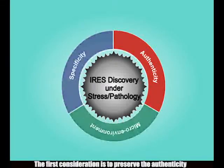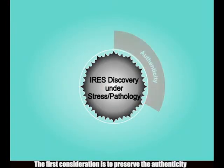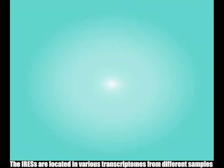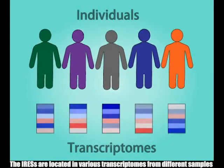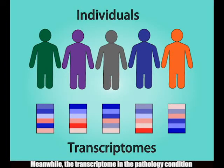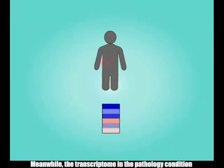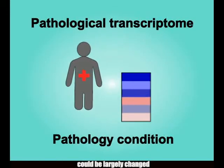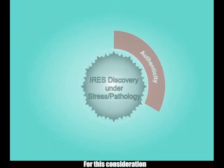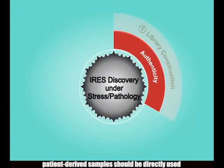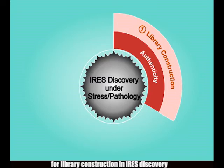The first consideration is to preserve authenticity. IRESs are located in various transcriptomes from different samples. Meanwhile, the transcriptome in the pathology condition could be largely changed, and specific IRESs related to diseases can only be detected in such conditions. For this consideration, patient-derived samples should be directly used for library construction in IRES discovery.